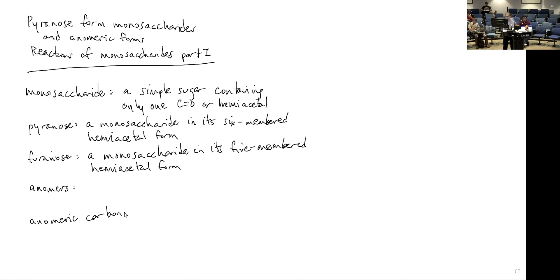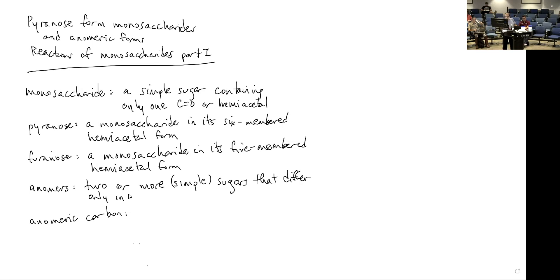There's the term anomer. Anomers are a type of stereoisomer. Anomers are generally pyranoses or furanoses — and we're really only concerned about pyranoses — that differ in configuration only at carbon 1, the hemiacetal carbon. So two simple sugars that differ only in configuration at the hemiacetal carbon. We call those two forms the alpha and beta anomers, using Greek letters.